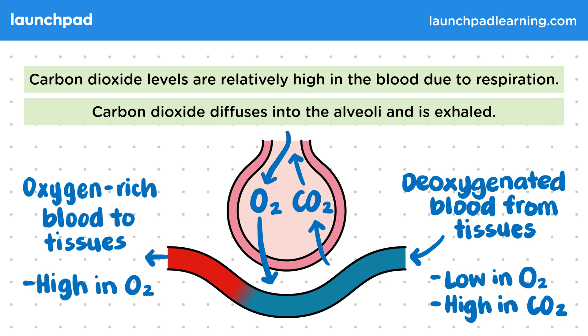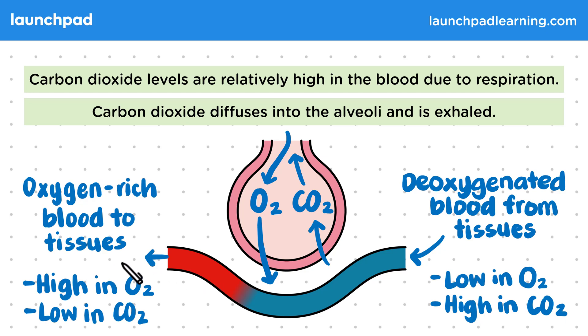As a result of this gas exchange, we end up with oxygen-rich blood that's also low in carbon dioxide. Because of this, this oxygen-rich blood can pick up more carbon dioxide from respiring cells in the body.